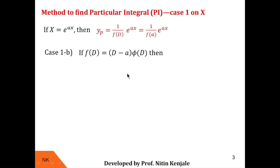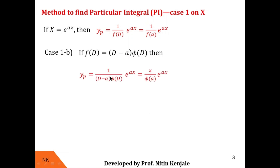If f(D) contains one of its factors as (D - a), then after substituting D = a in it, f(a) will become 0. In that case, to find the corresponding yp, we first eliminate this (D - a) from the picture and replace it by x. We then replace all the D in φ(D) by a. Therefore the corresponding yp is given by x/φ(a) into e^(ax).